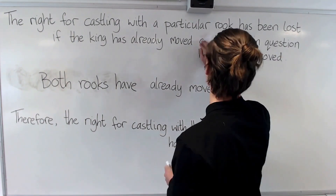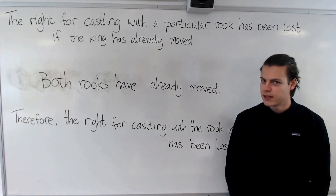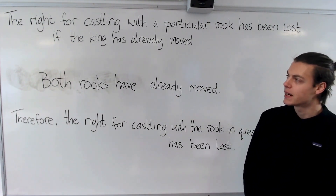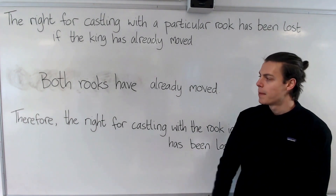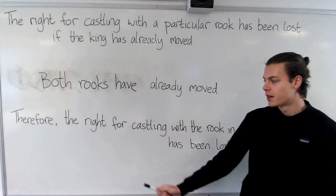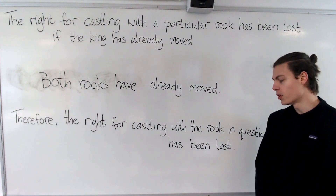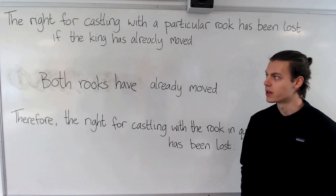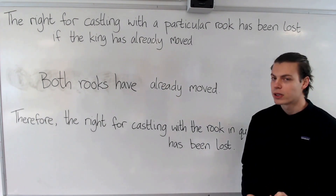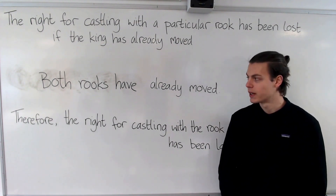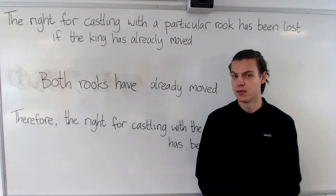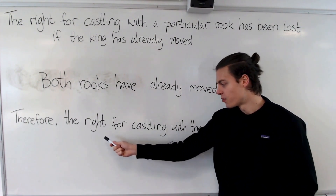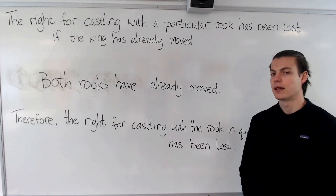Now consider this. We are given a slightly different rule — we're told only that the right for castling with a particular rook has been lost if the king has already moved. And we know that both rooks have already moved. The conclusion is that therefore the right for castling with the rook in question has been lost. Remember, this isn't testing your chess knowledge — we're using only the rule that we are given. We are not told that the right for castling is lost if the rook has moved; we're only told that it has been lost if the king has moved. And we are not told that the king has moved. So we cannot logically conclude that the right for castling with the rook has been lost. This is not a valid deduction.